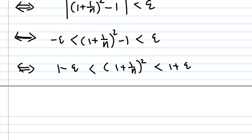Since ε is small, if ε < 1, then we can take the square root. Therefore, √(1-ε) < 1 + 1/n < √(1+ε).